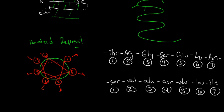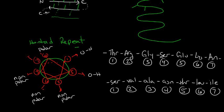This polypeptide chain is part of an alpha helix. Serine at position one has an OH — it's an alcohol group. Position two is valine, which is non-polar. Position three is alanine, also non-polar. Position four is asparagine, which is polar. Position five is threonine, again an alcohol — OH. Position six is leucine, non-polar. And position seven is isoleucine, which is also non-polar.